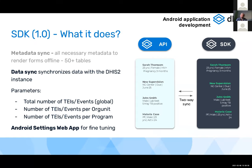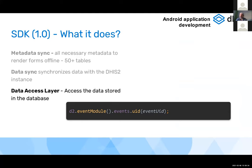The most important parameter is the total number of tracked entity instances (TEIs) or events downloadable from the server. This number can be global or linked to a particular org unit or program — for example, 200 TEIs for malaria and 400 for HIV. The Android Settings web app allows fine-tuning of different synchronization parameters.